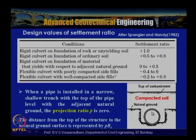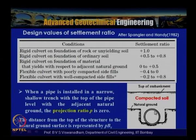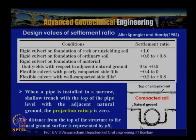When the pipe is installed such that the top matches the natural ground surface, the projection ratio p is 0. The distance from the top of the structure to the natural ground surface is represented by p × bc.